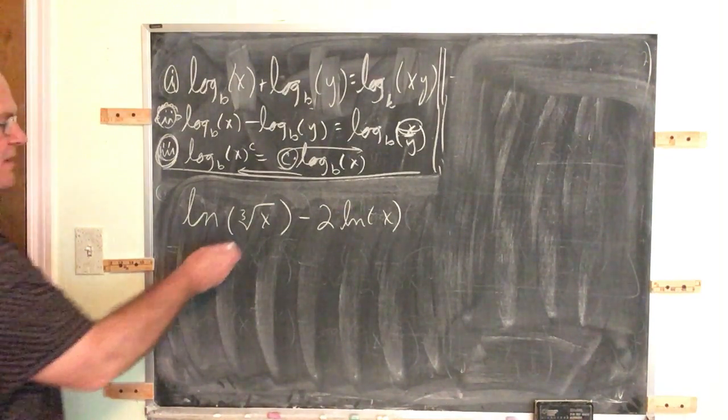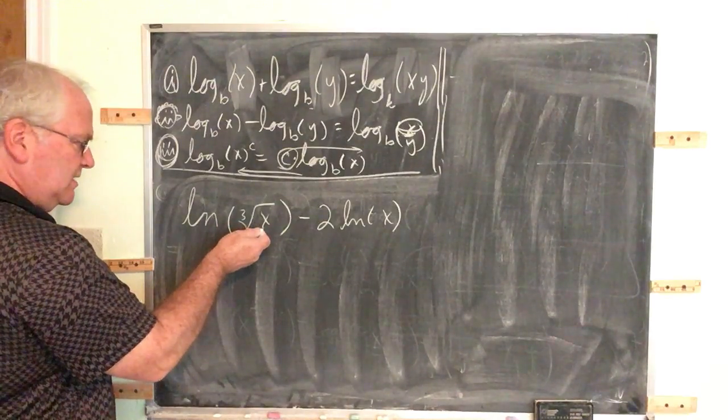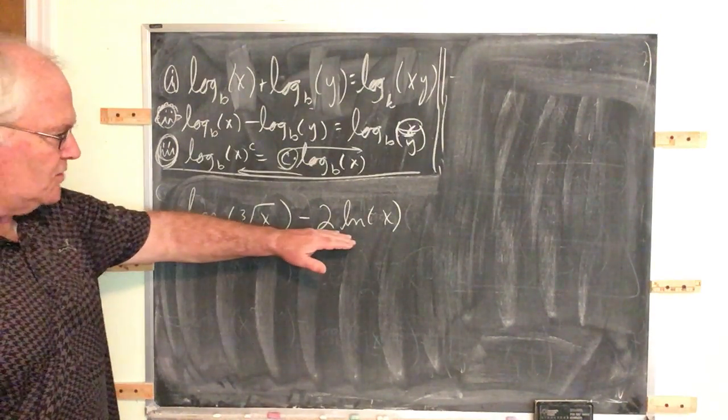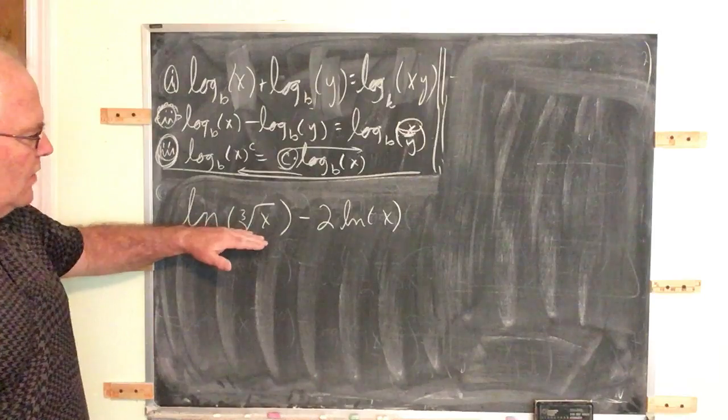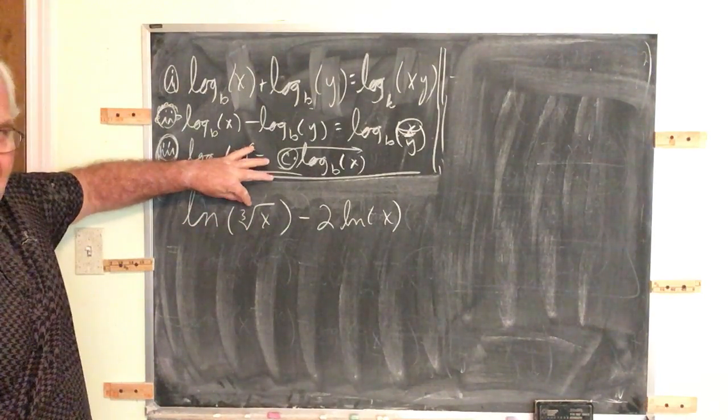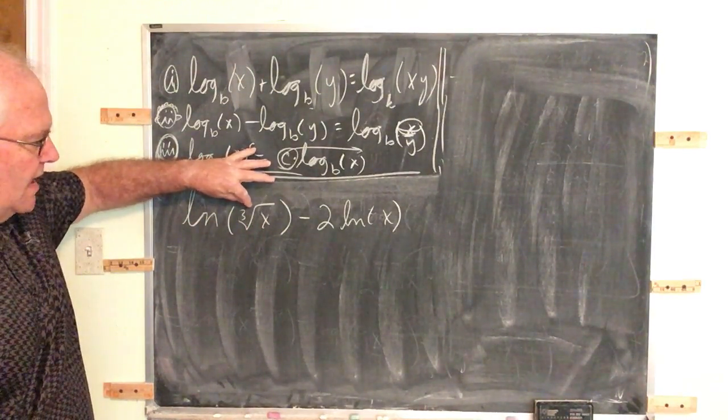So what do we have here? We have natural log of the third root of x minus two natural log of x. Now, logarithms and exponentials, they don't play well with radicals. We should rewrite this in exponential form.